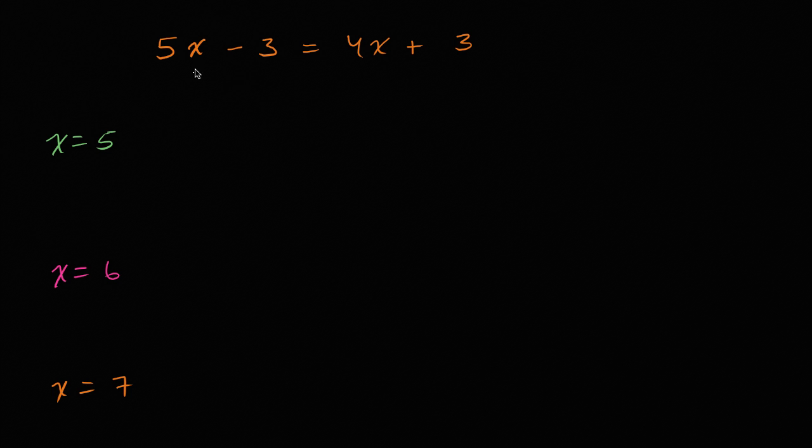So what we want to do is figure out an x that satisfies this. There's some number that if I take five, multiply it by that number, subtract three from it, that's going to be the same thing as if I take four times that number and add three to it. And before we go into how to solve these types of things, let's just first see if we can test whether something does satisfy this equation.